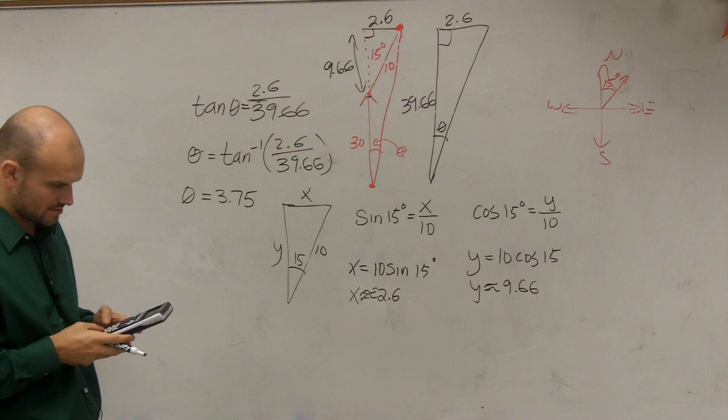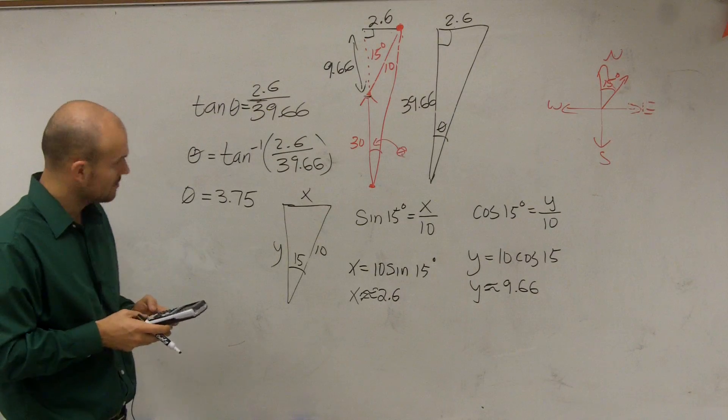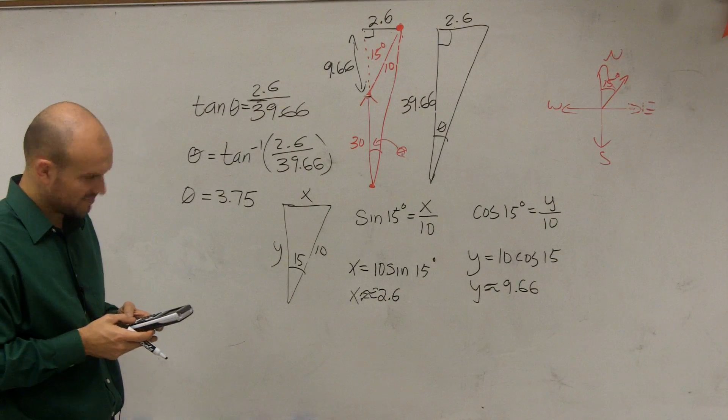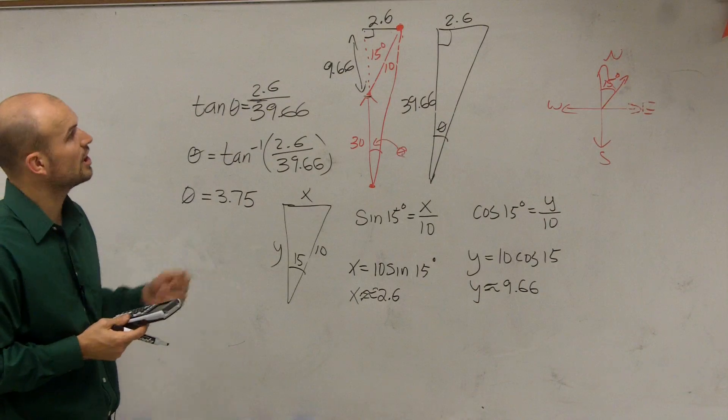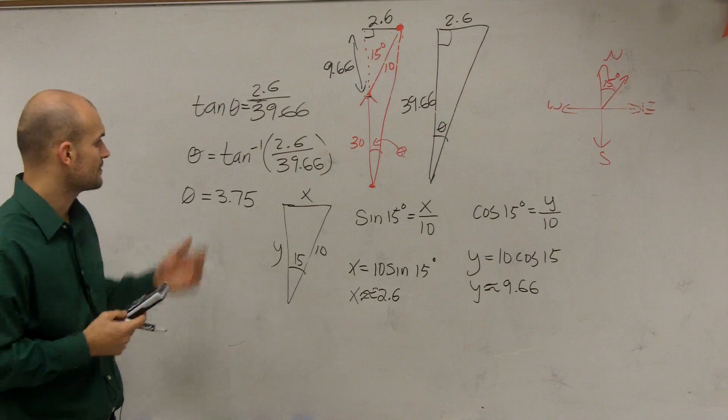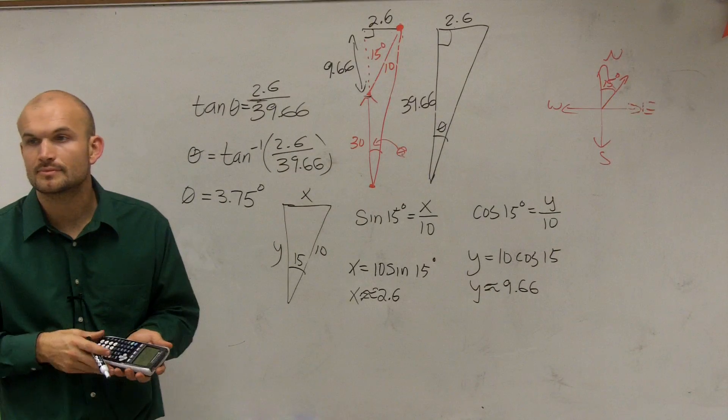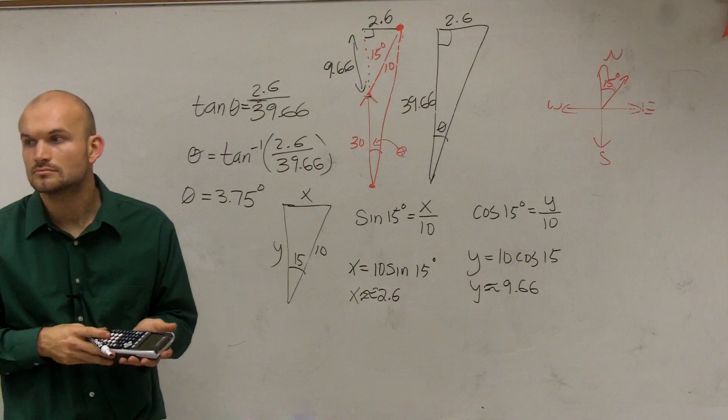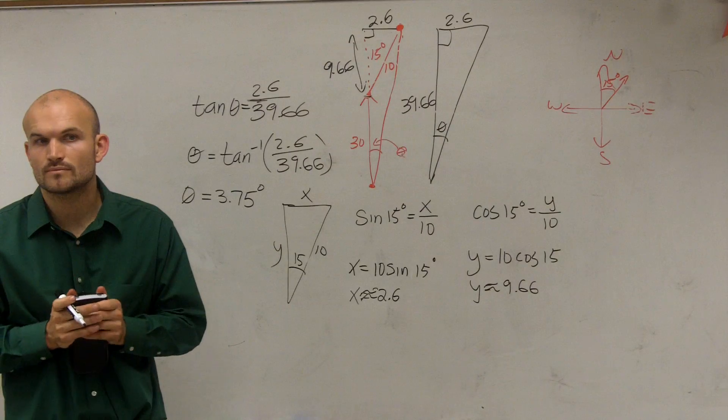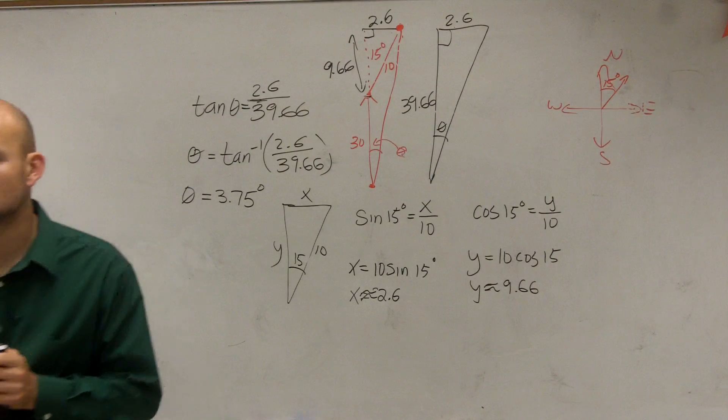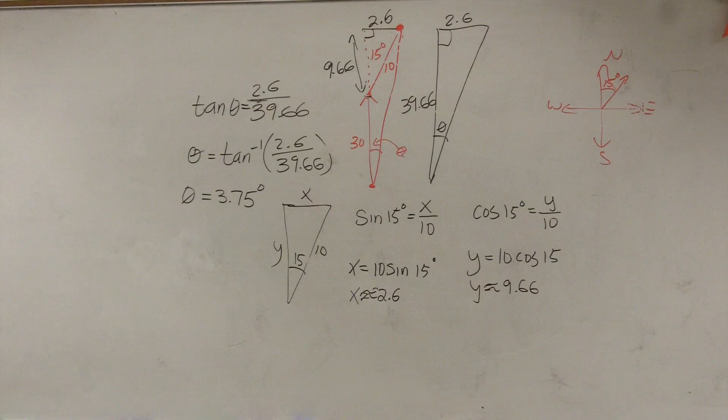It doesn't make sense how it would be smaller. Oh, well, it is 30 nautical miles down. So it's going to be 3.75 degrees. Any questions?